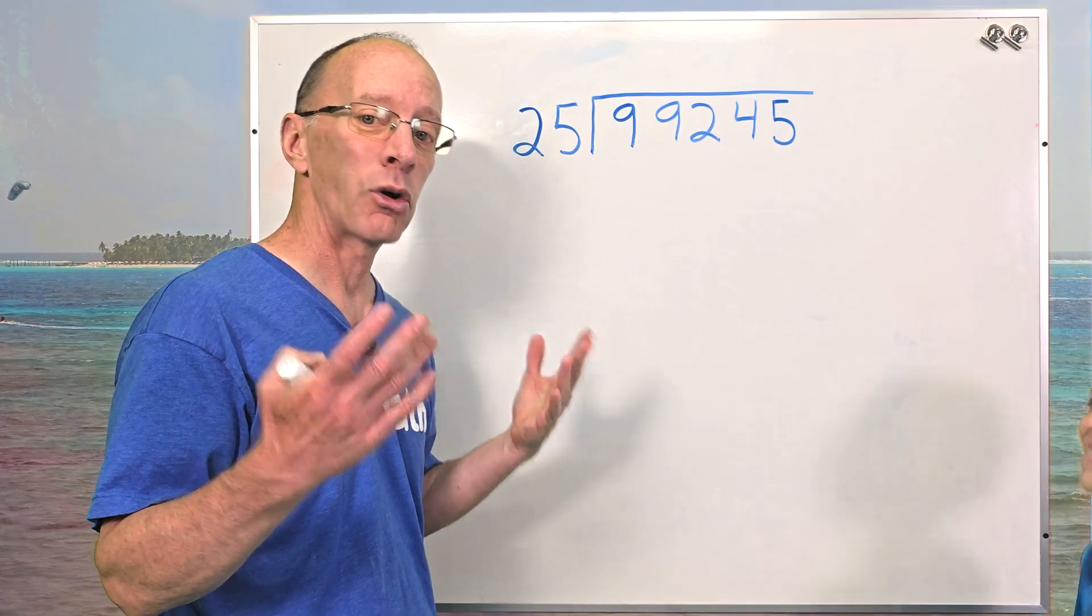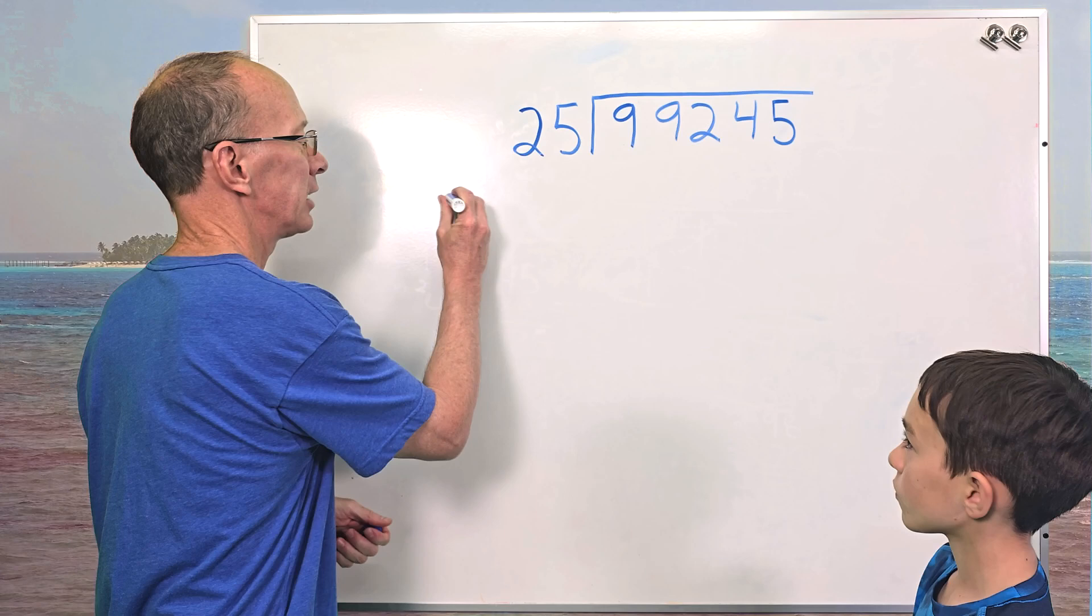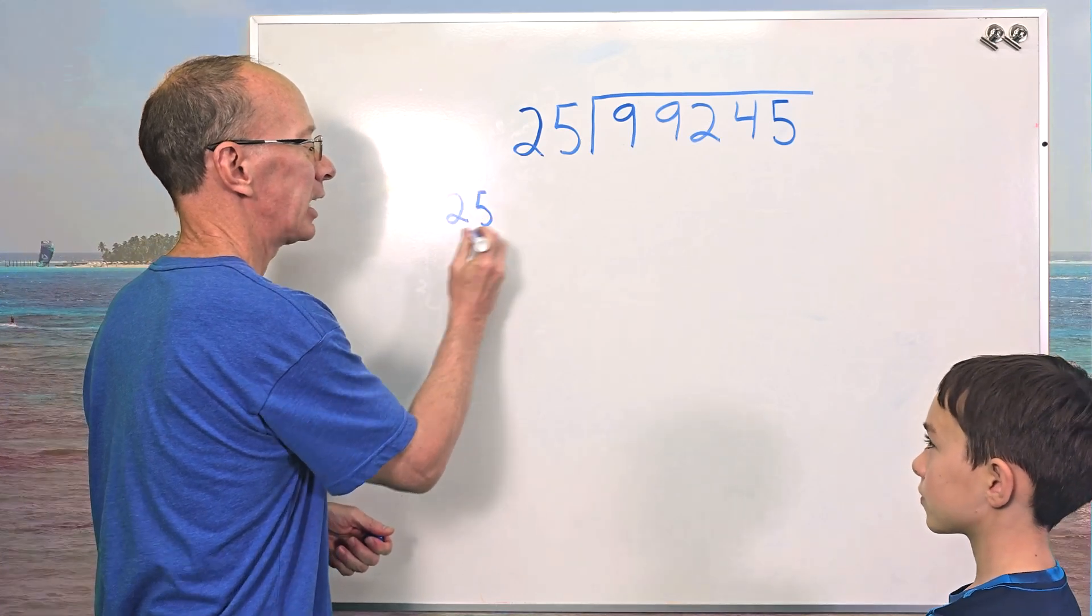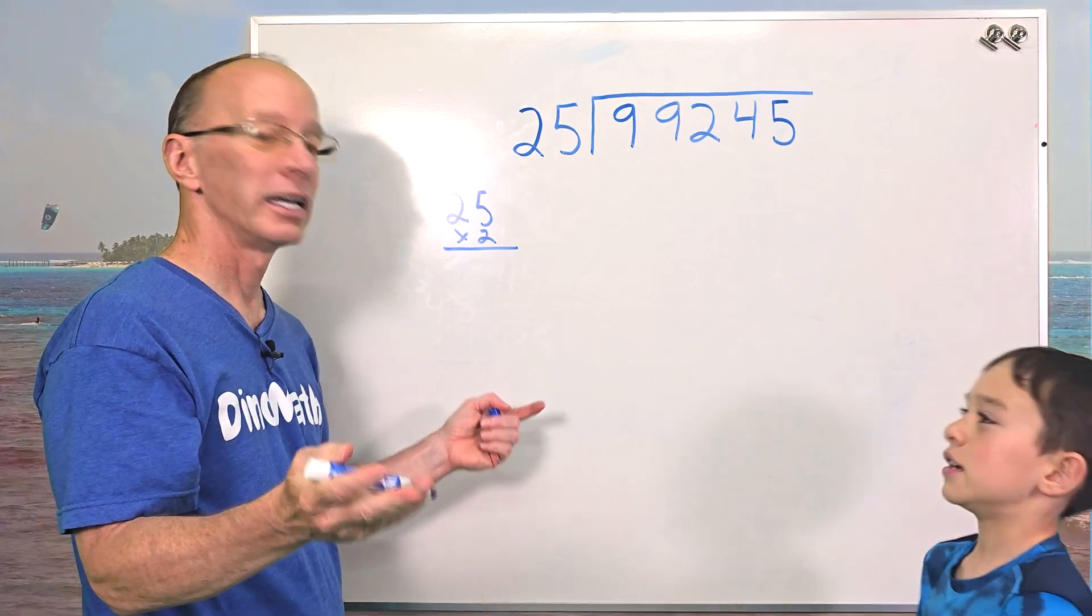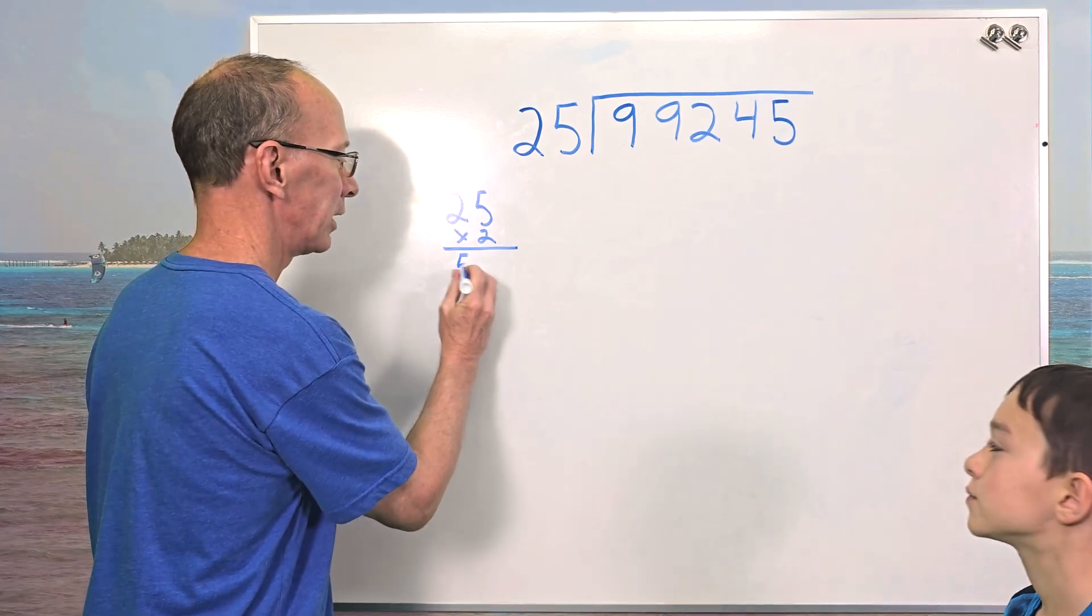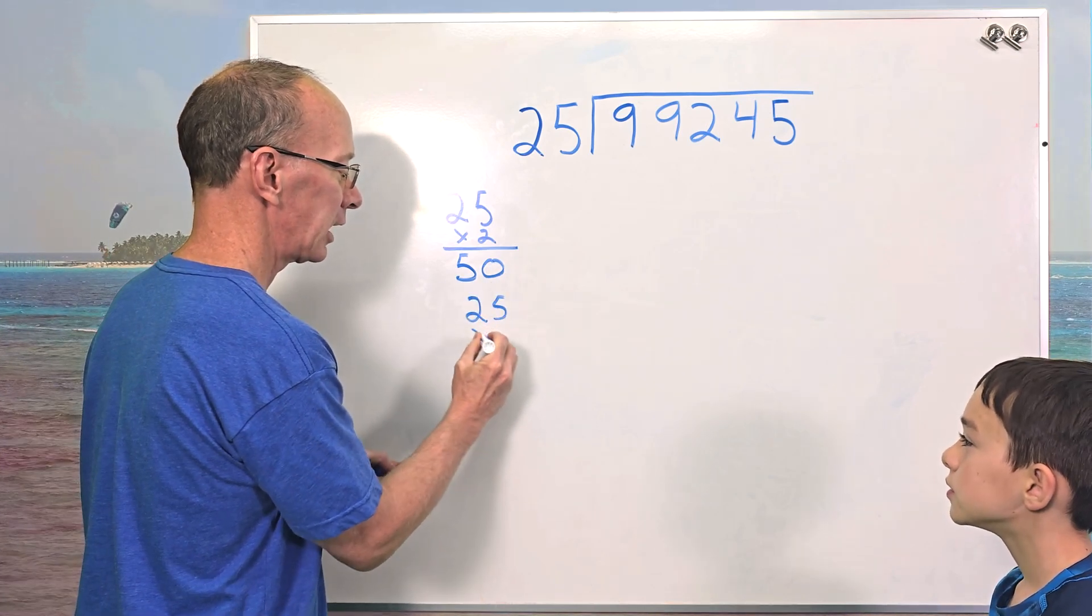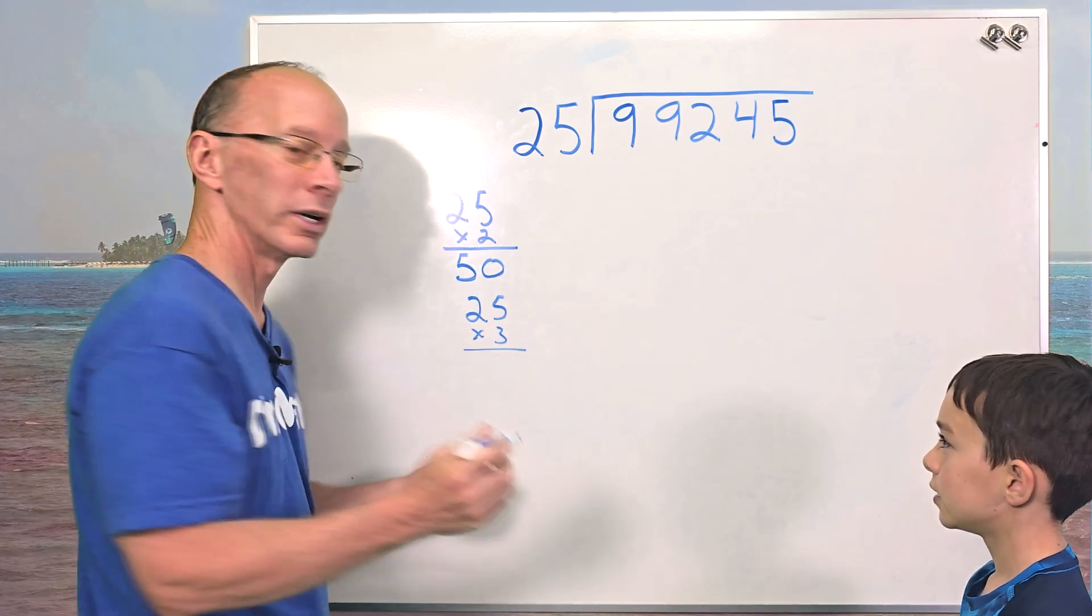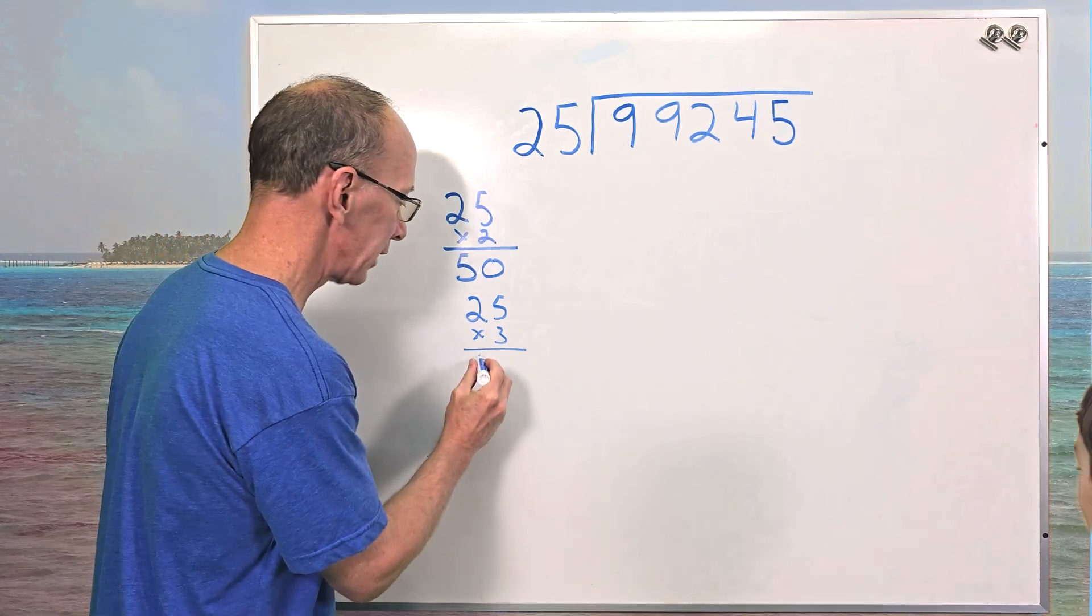And 25 is like a quarter. All right. So I'm just going to show you, if I take 25 and times it by two, what is two quarters? 50. 50. All right. So we have 50. And then let's do 25 times three. So what is 25 times three? 75. Wow. He is super fast. 75.